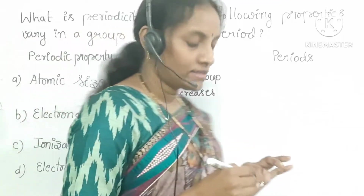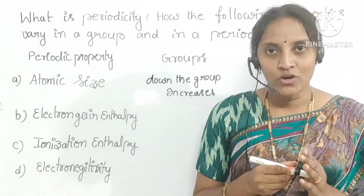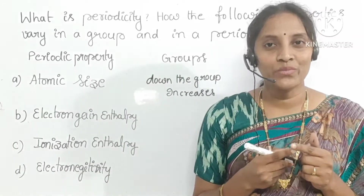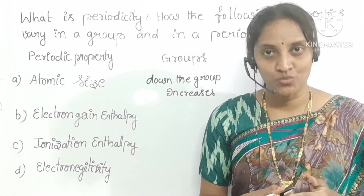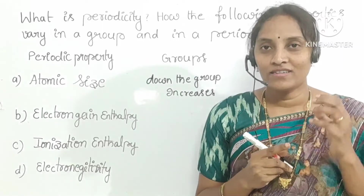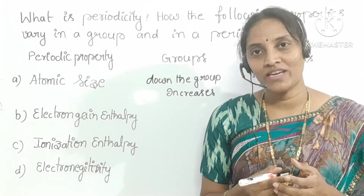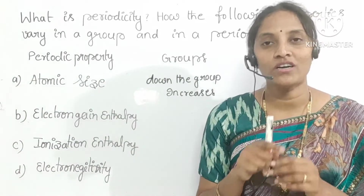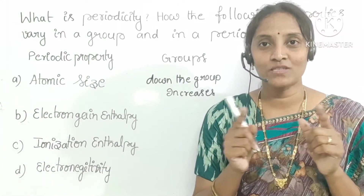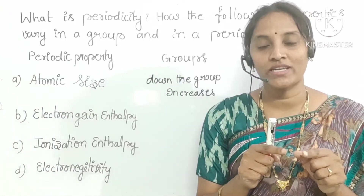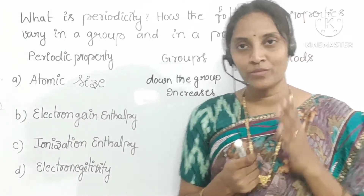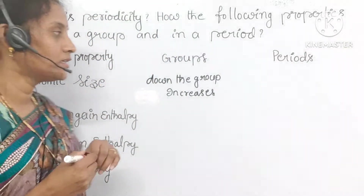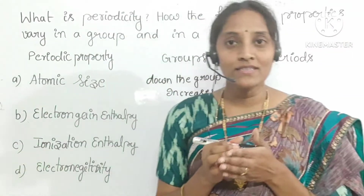What is the reason behind this? Down the group, atomic numbers increase and the shell number also increases. The newly arriving electron enters into a new shell, so the distance between the center of the nucleus and the outermost shell of the atom automatically increases.